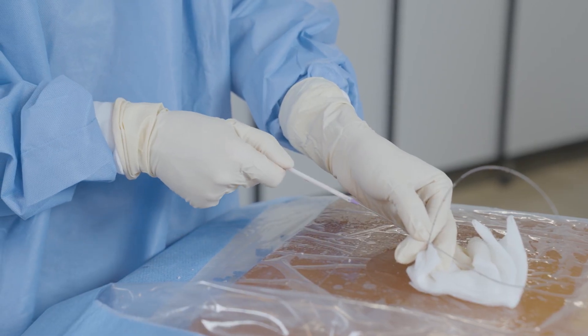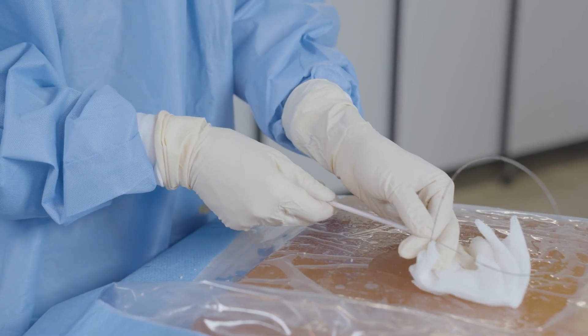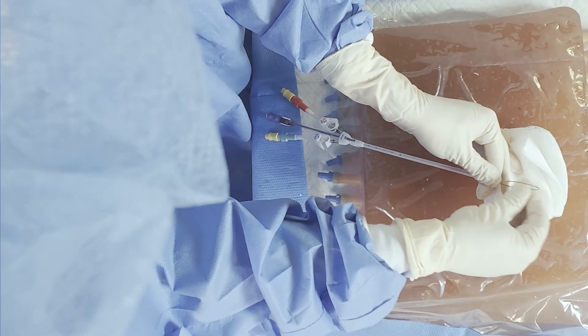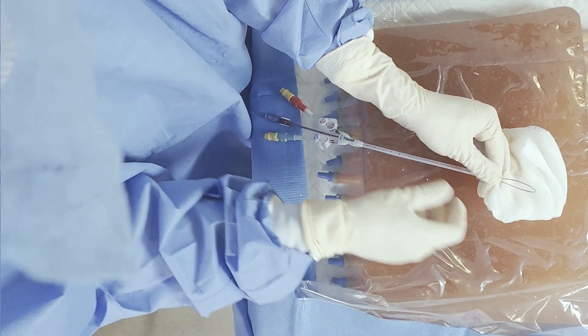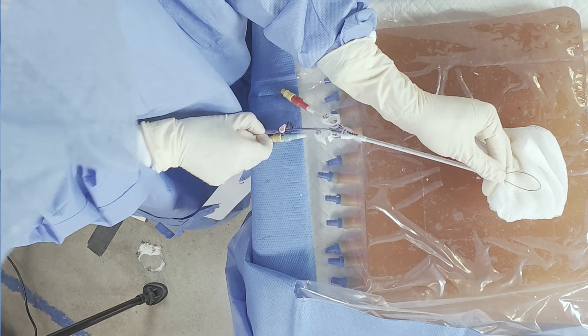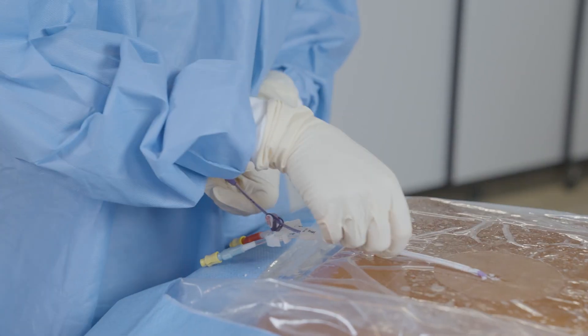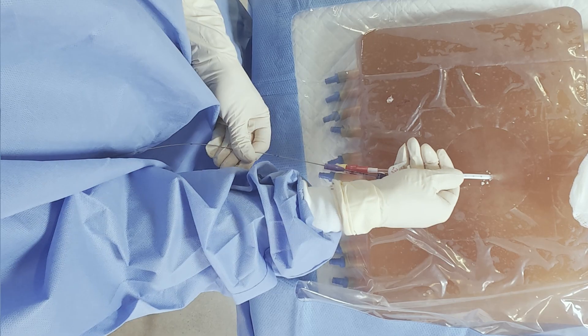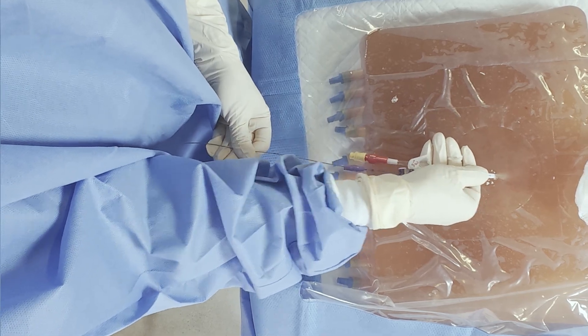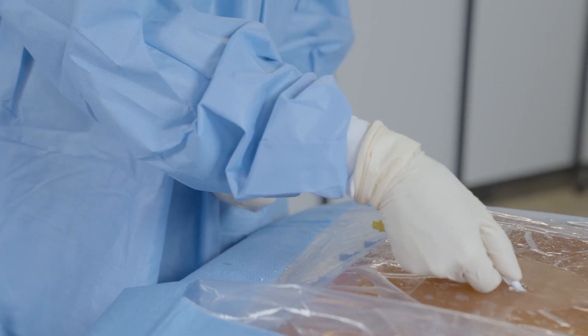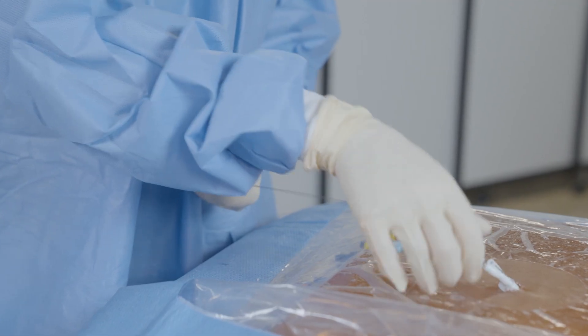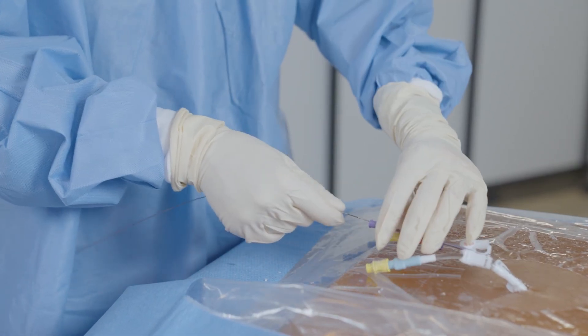Feed the trialysis catheter over the guide wire until the guide wire comes out from the proximal purple lumen. Advance the catheter through the insertion site into the vessel and advance to appropriate length based on your anatomical site. Once at the appropriate distance, remove the guide wire from the purple port.